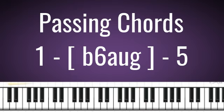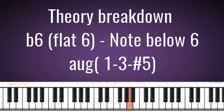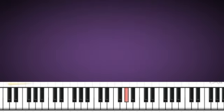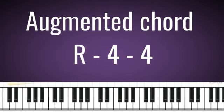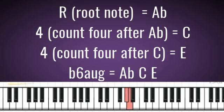Now, in music theory, the flat 6 is the note below the 6. The formula for finding the augmented chord is to count 4 notes after the root note. So, we have A-flat as the root note, then we count 4 upward — we have C, we have E. So this is the flat 6 augmented chord in the key of C.